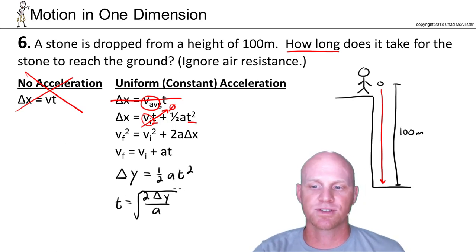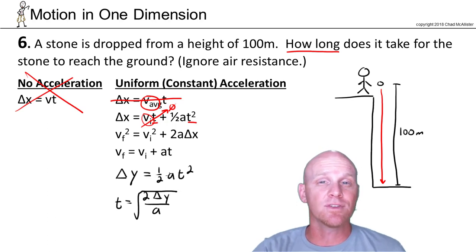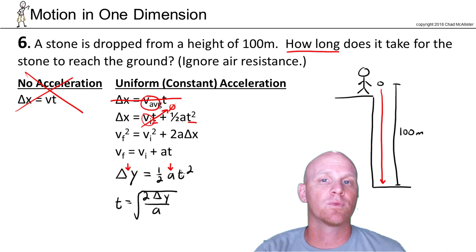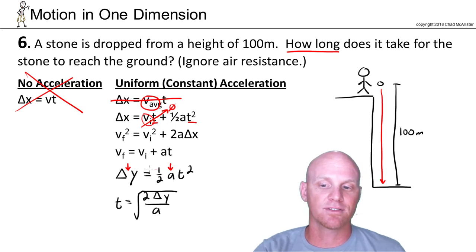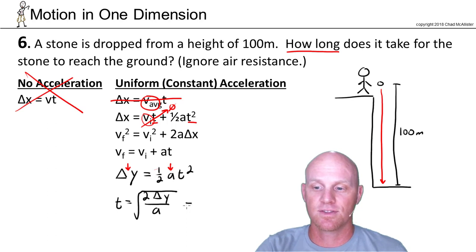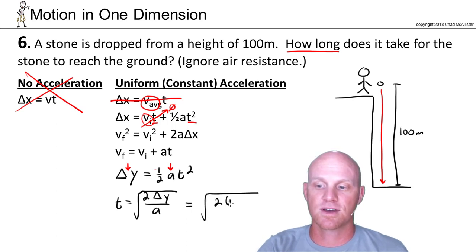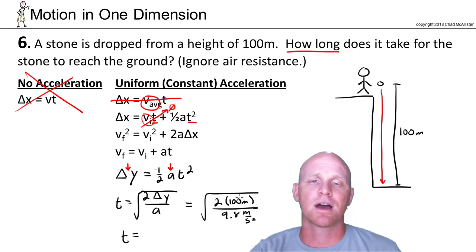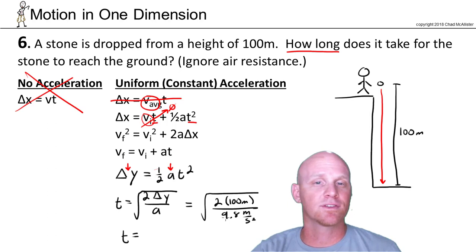One question we have to ask is whether the acceleration due to gravity is +9.8 or −9.8 m/s² — does it matter? Our displacement is 100 meters downward and our acceleration is 9.8 m/s² downward. Since they both point downward, we can make them both positive or both negative — either way the negatives cancel. I'll plug them in as positive numbers. So we get the square root of 2 × 100 meters divided by 9.8 m/s². Approximating: 200 ÷ 10 = 20, and the square root of 20 is somewhere between 4 and 5.